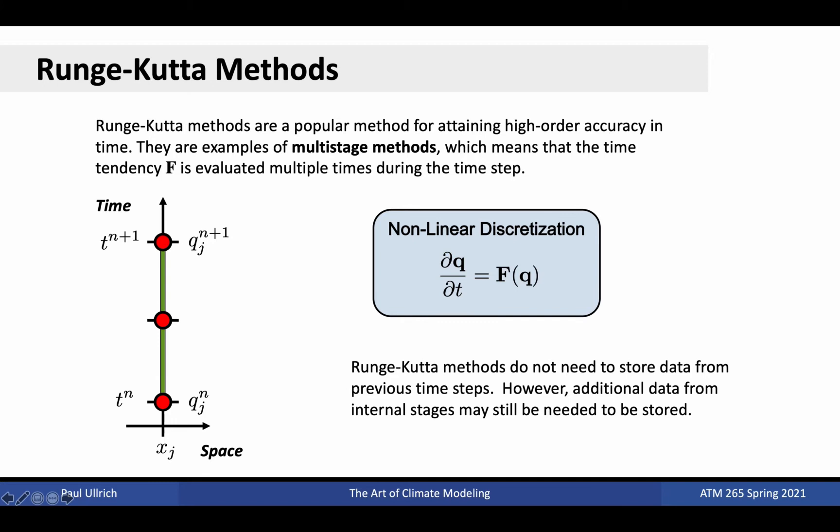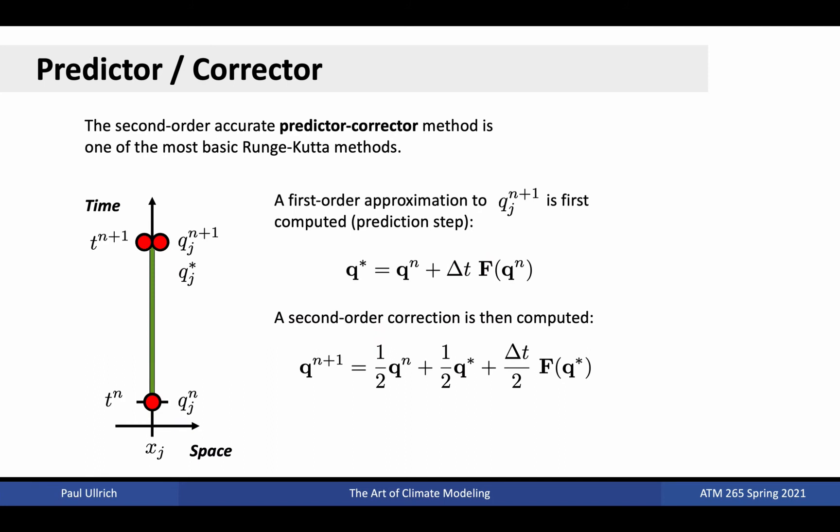Runge-Kutta methods are a class of methods capable of attaining higher order accuracy in time within each time step. They do so by evaluating the time tendency at multiple points within the time step, then using that information to estimate the integrated time tendency. Methods of this type are known as multi-stage methods. Although they do not require storing of data from previous time steps, additional data storage may be needed for data calculated during the time step.